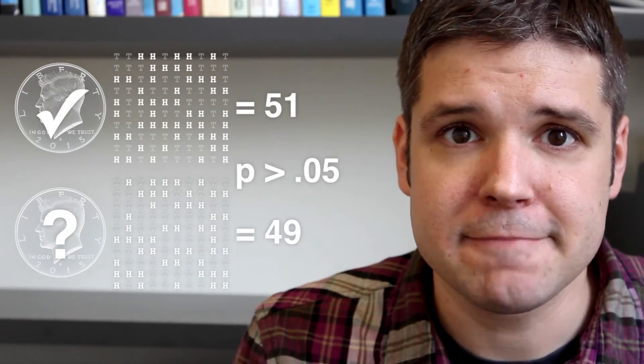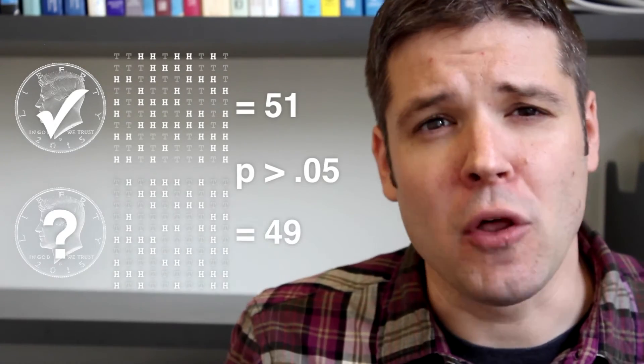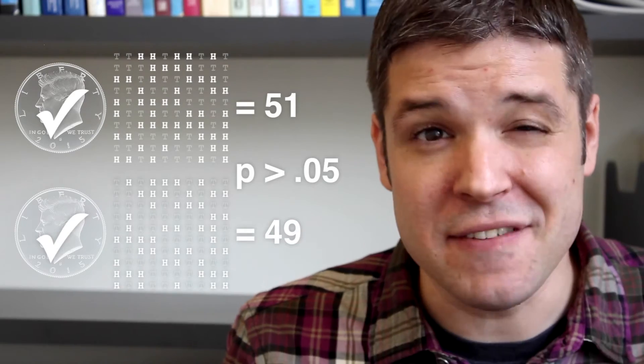So if we take two coins, one that we know is fair and one that we're not so sure about, and toss each of them 100 times, we'd expect an insignificant p-value if they were actually both fair coins. We don't have any evidence to reject the null hypothesis that the two coins behave in the same way.